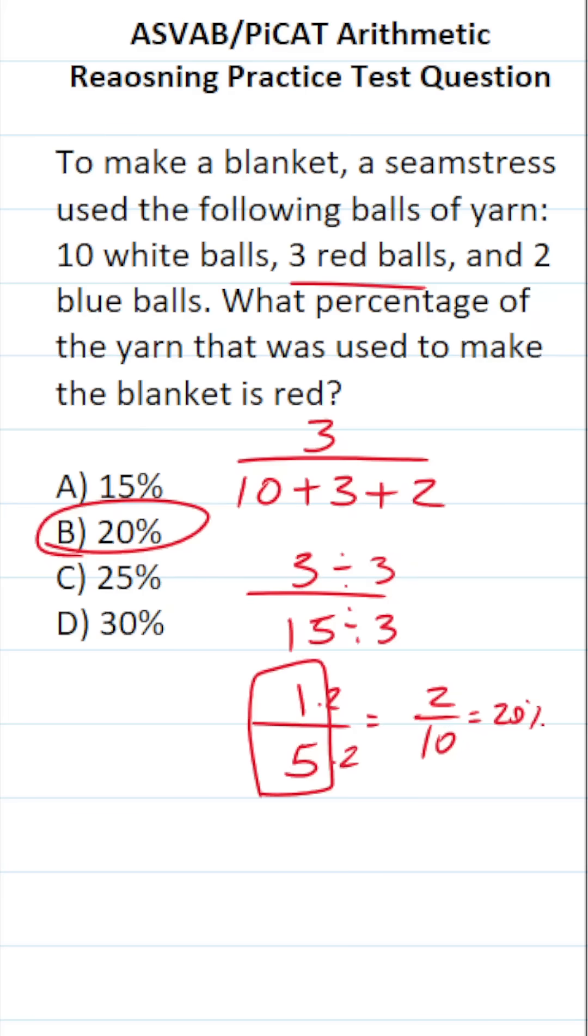Or you could have done the long division. This says 1 divided by 5. How many times does 5 go into 1? It doesn't. So add a decimal and a 0 placeholder. Bring that decimal into your answer. How many times does 5 go into 10 without going over? Well, 5 times 2 is exactly 10 with no remainder.